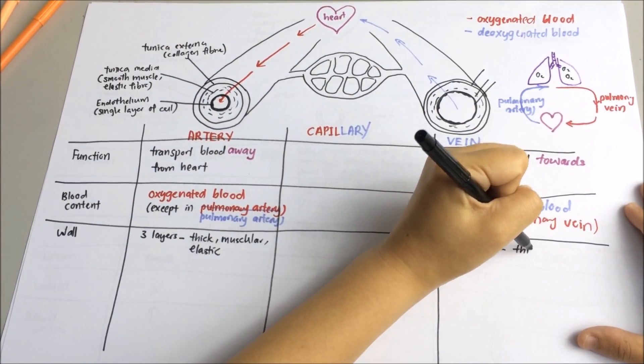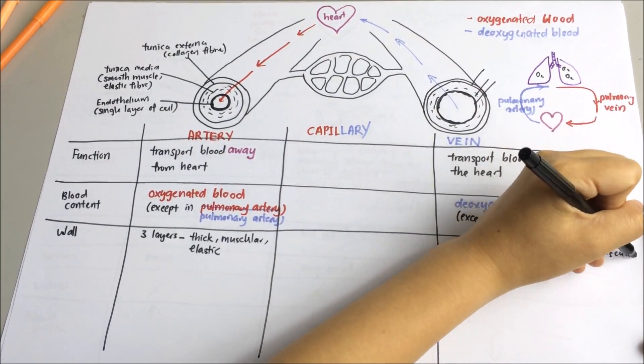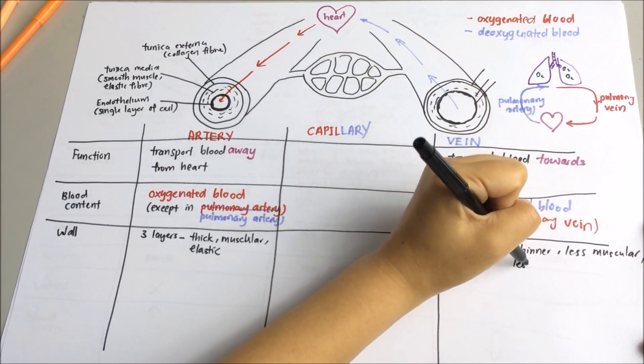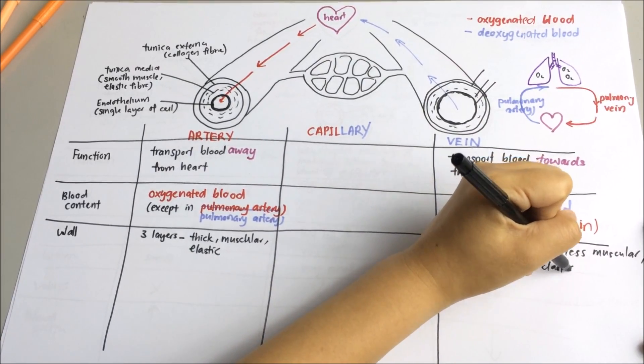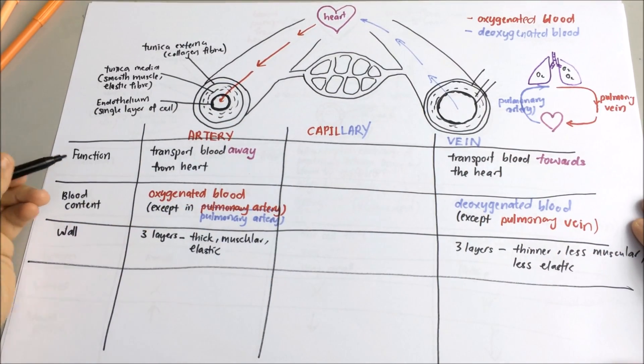While blood in the vein is under lower pressure than the blood in the artery. Therefore, it has thinner walls and thinner layers of muscles and elastic fibers. Therefore, it is less muscular and less elastic.